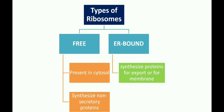There are different types of ribosomes depending upon their location. The first type is the free ribosome and the second is the ER-bound ribosome. Free ribosomes are found in the cytosol and synthesize proteins for the usage of the cell itself. ER-associated ribosomes are bound to the ER and synthesize proteins for export or for the membrane.